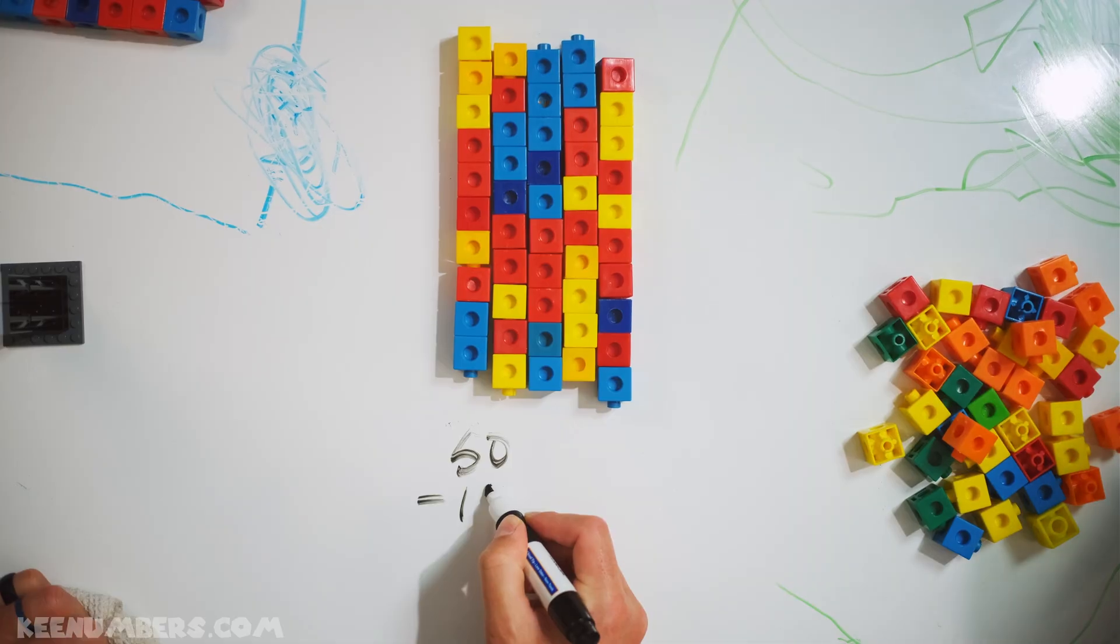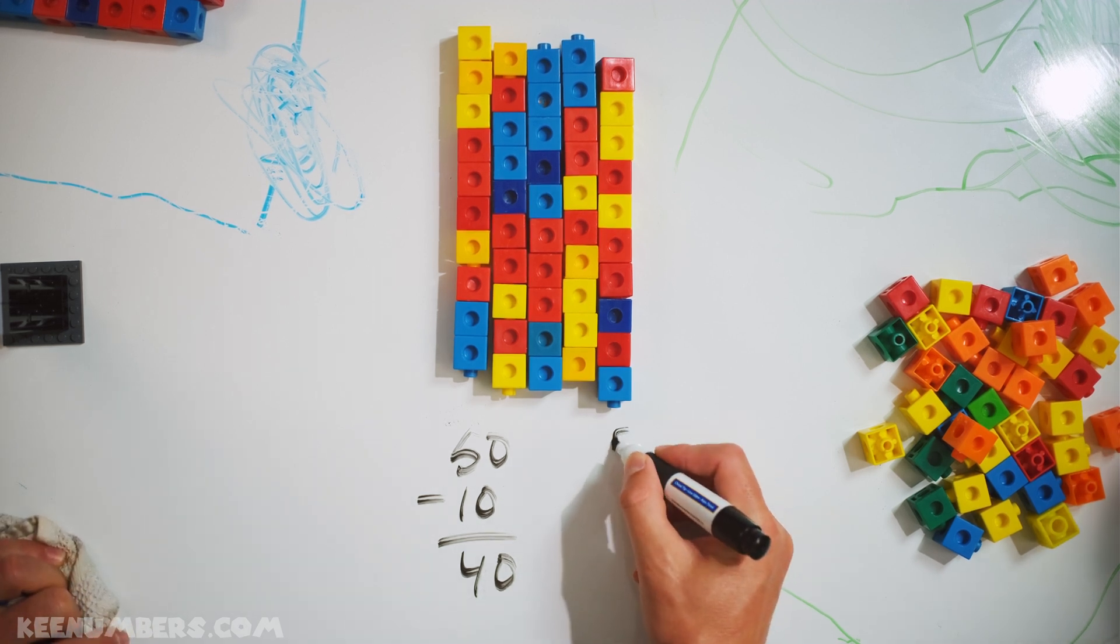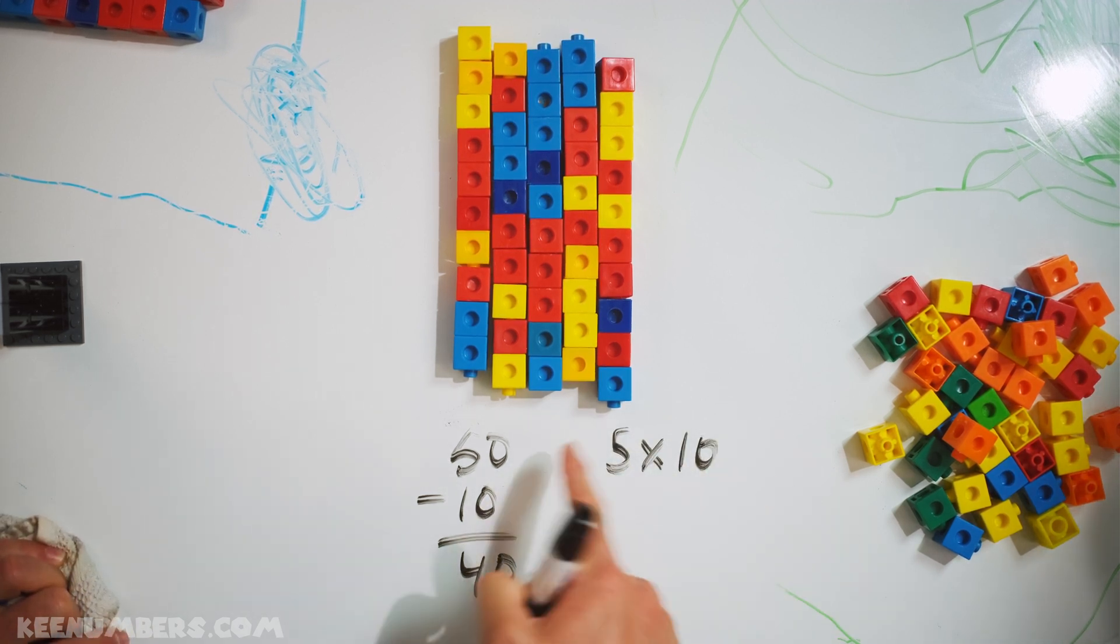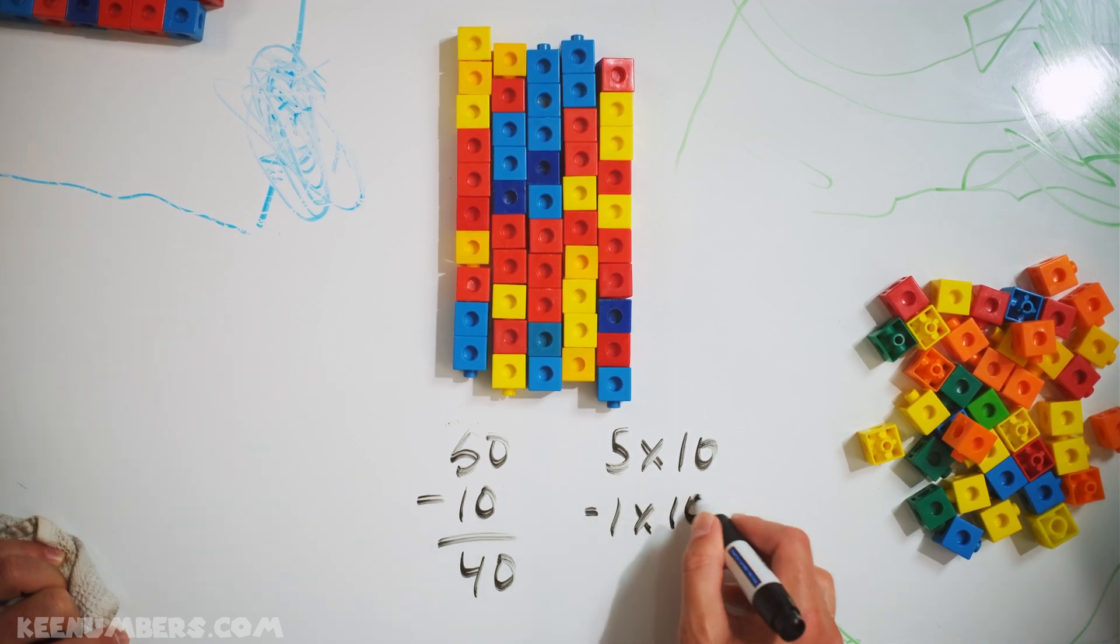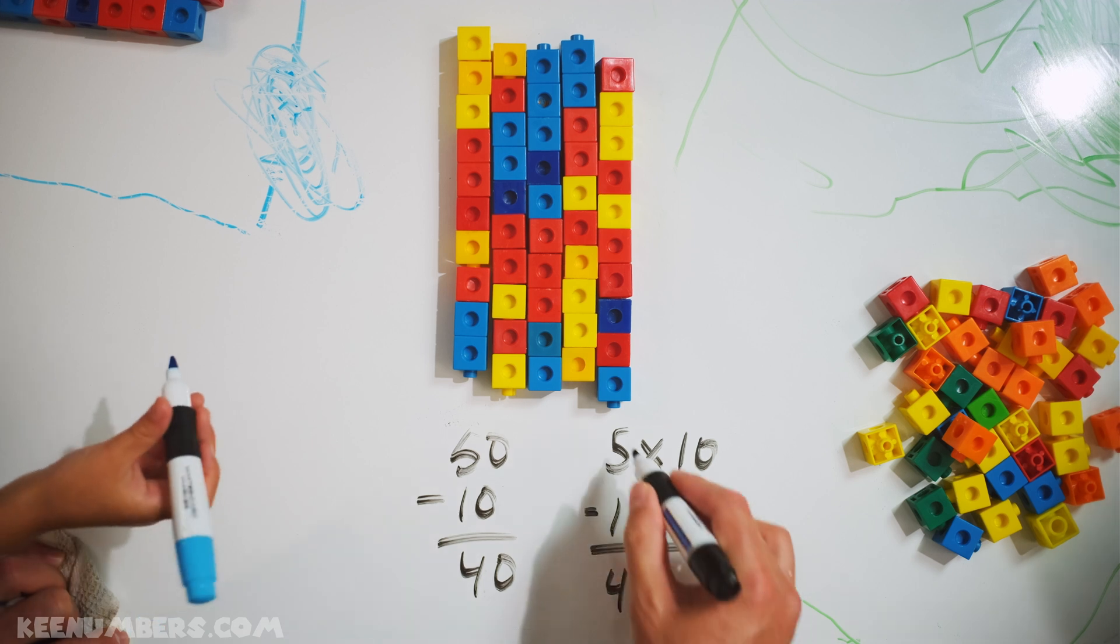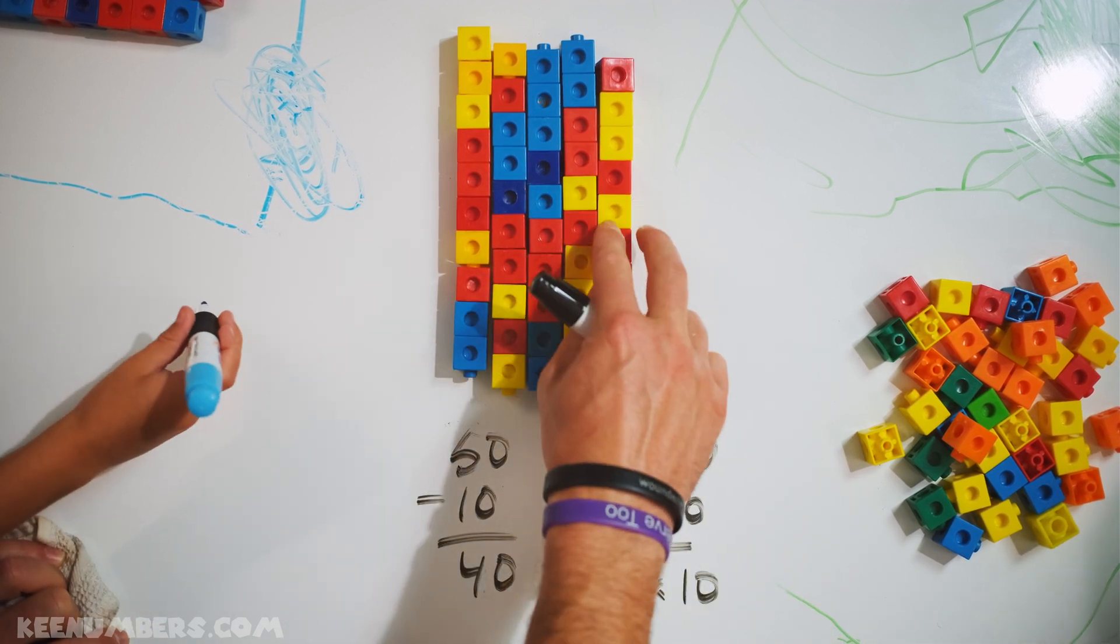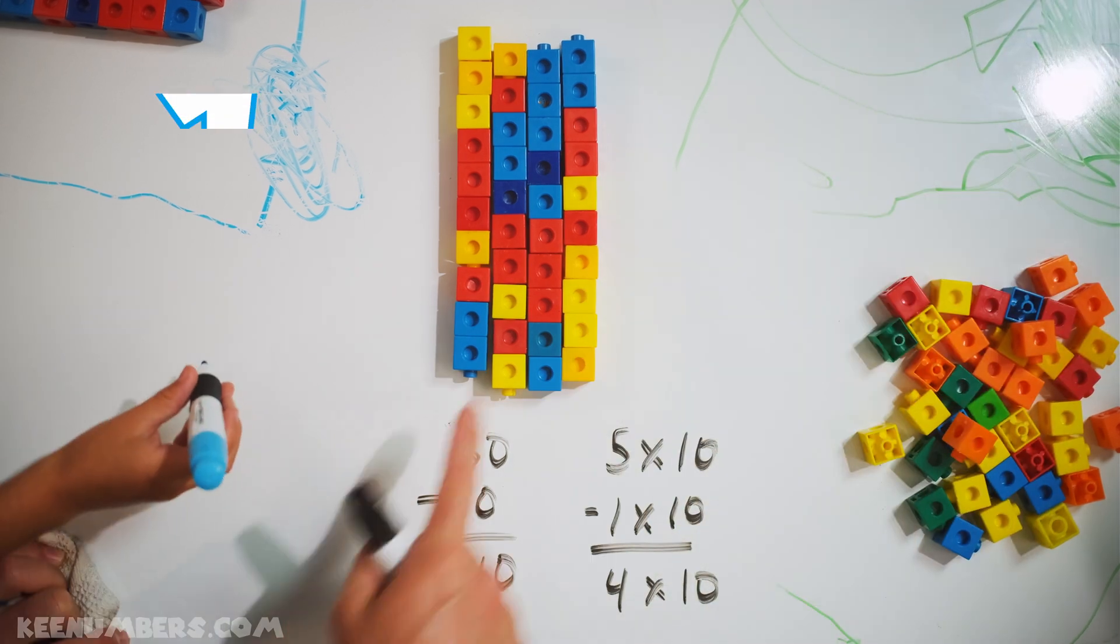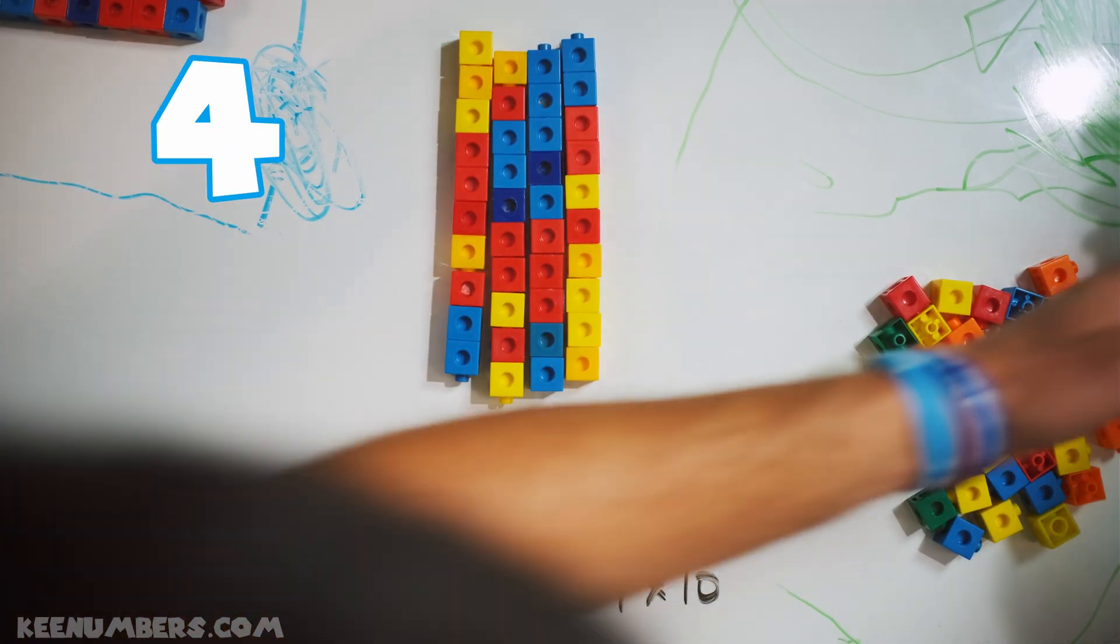50 minus 10 is 40 according to the Hezzyman. We have five stacks of 10. That's 50 and we are subtracting one stack of 10. So that's five minus four or four stacks of 10. Go ahead and subtract 10. How many stacks of 10 do you have? 1, 2, 3, 4, 40. Hezzy was right.